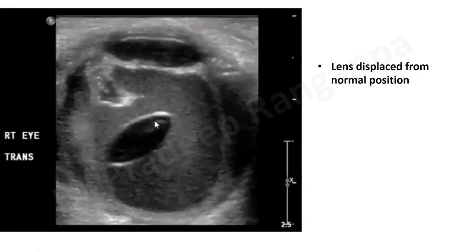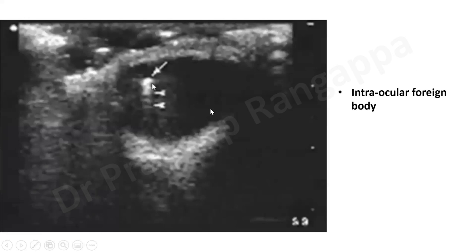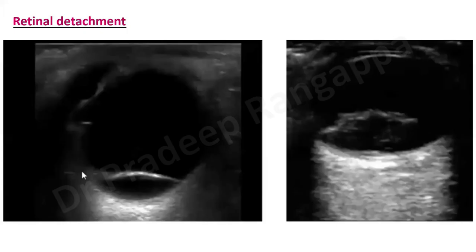In a trauma patient, if you see an opaque or echogenic structure within the vitreous, that suggests an intraocular foreign body — any white element within the vitreous should prompt consideration of foreign body and referral to ophthalmology. While we would not expect intensivists to routinely identify retinal detachment, it is very evident when present.